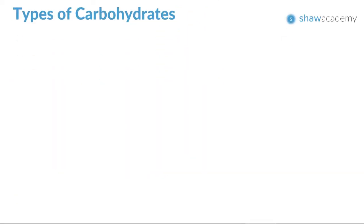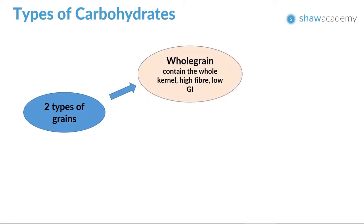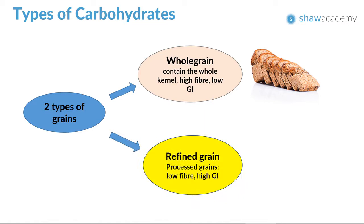Carbohydrates are generally divided into two categories. We have whole grains, which contain the entire grain kernel — the bran, the germ, and the endosperm. These are generally a good source of fiber and low GI foods. Then we have refined grains, which have been milled — a process that removes the bran and the germ to give grains a finer texture and improve their shelf life.